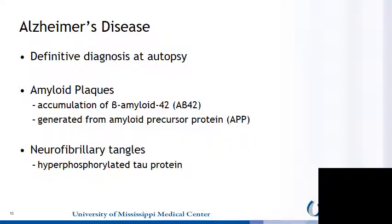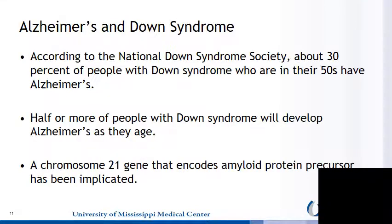A definitive diagnosis of Alzheimer's cannot occur until autopsy, where we would see evidence of amyloid plaques and neurofibrillary tangles. According to the National Down Syndrome Society, about 30% of people with Down syndrome who are in their 50s have Alzheimer's. Half or more of people with Down syndrome will develop Alzheimer's as they age, and the chromosome 21 gene that encodes amyloid protein precursor has been implicated.